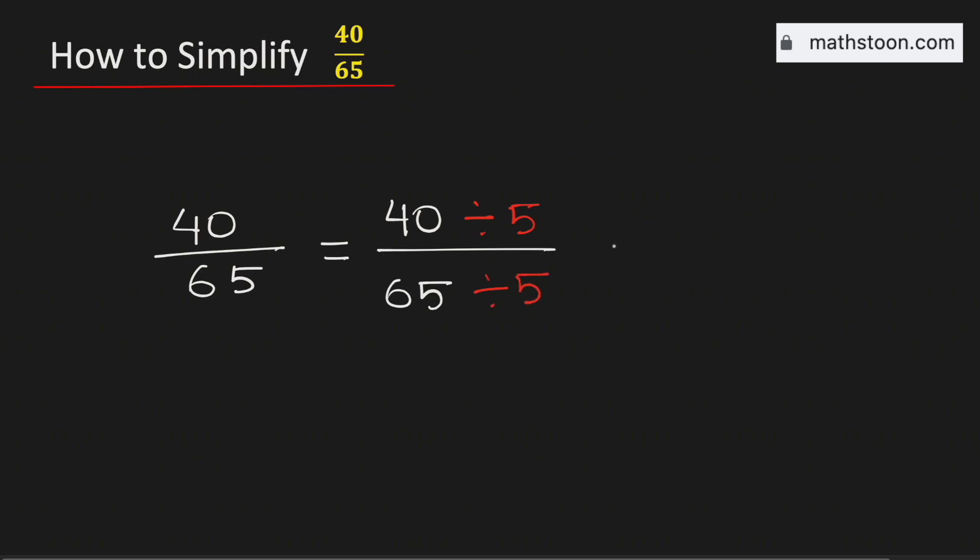And by doing so, we will get 8 over 13. And we know that this fraction is already simplified because 1 is the only common divisor of 8 and 13.